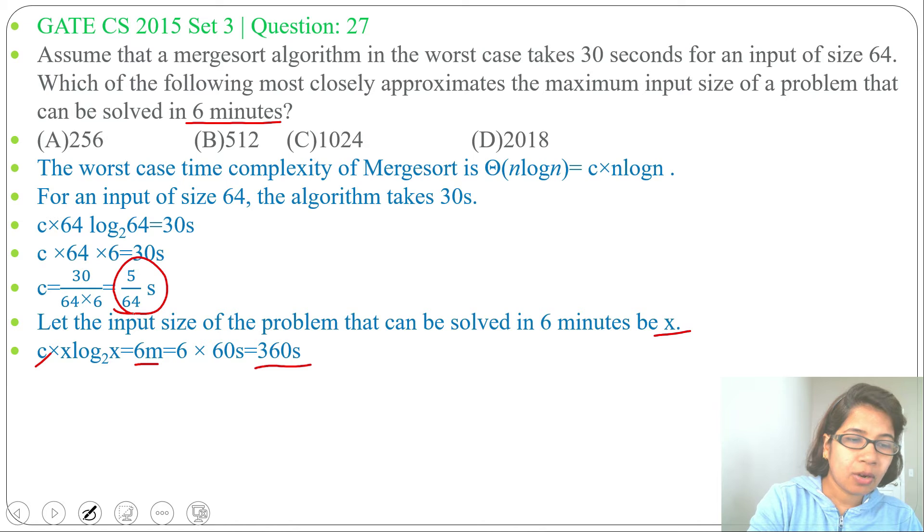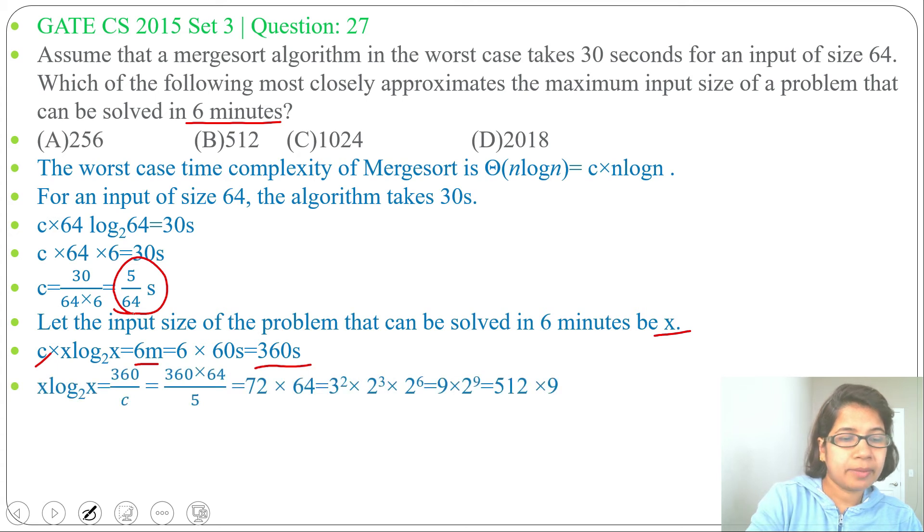So what will be x log₂x? Just divide C with 360. So x log₂x will be 360 divided by C, and C value is 5/64. The 64 will go up, so 360 × 64 / 5, that is 72, and this 64. So 72 × 64.